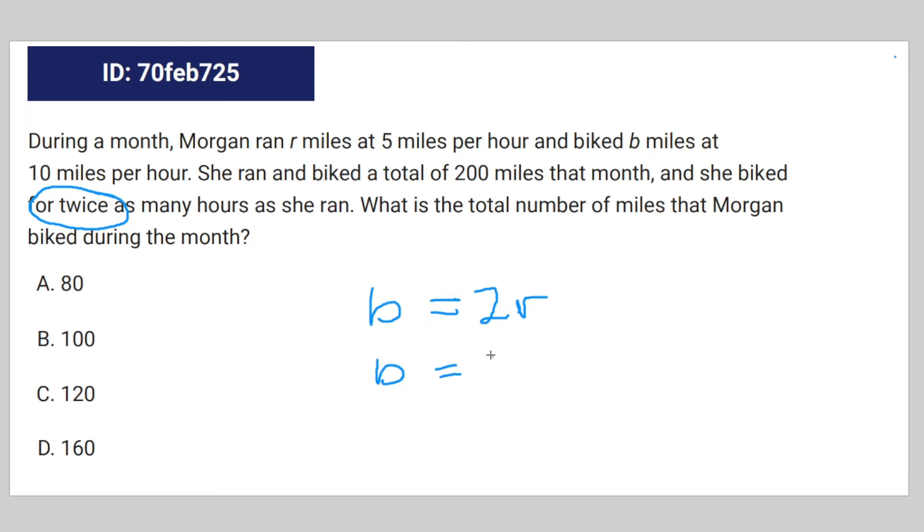So that's going to be b equals 2r times 2, which is b equals 4r. And the combined miles that she biked and the combined miles that she ran is going to be equal to 200 miles.